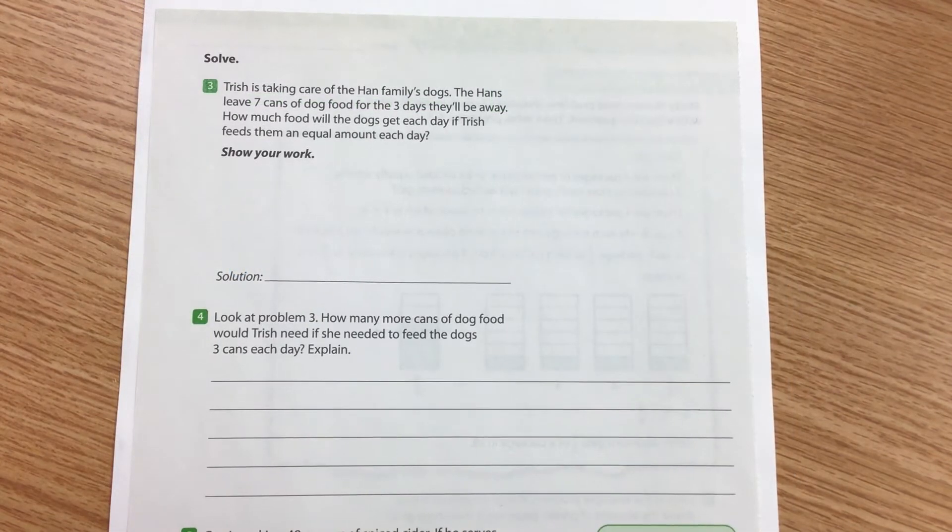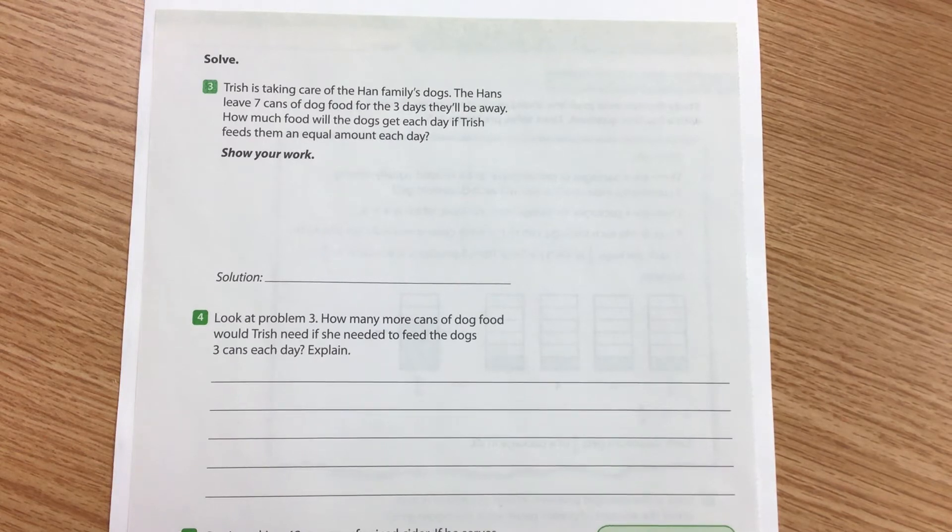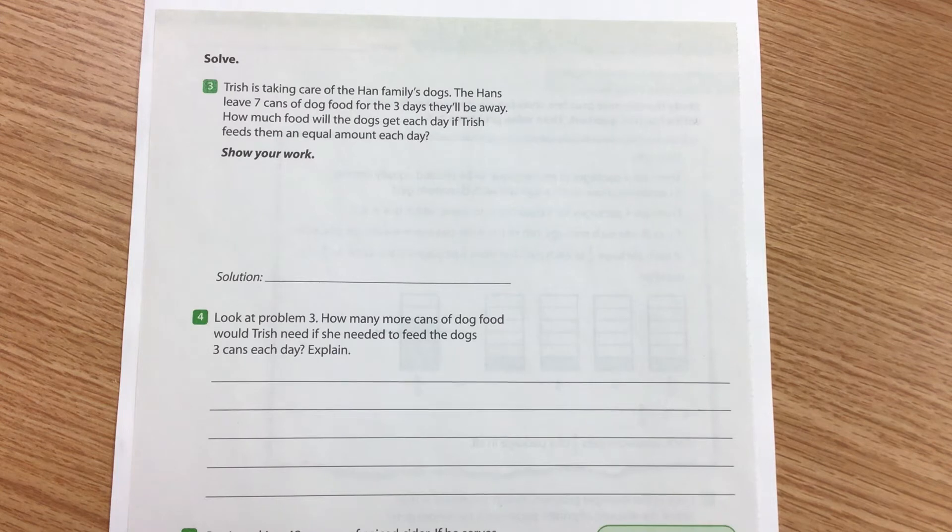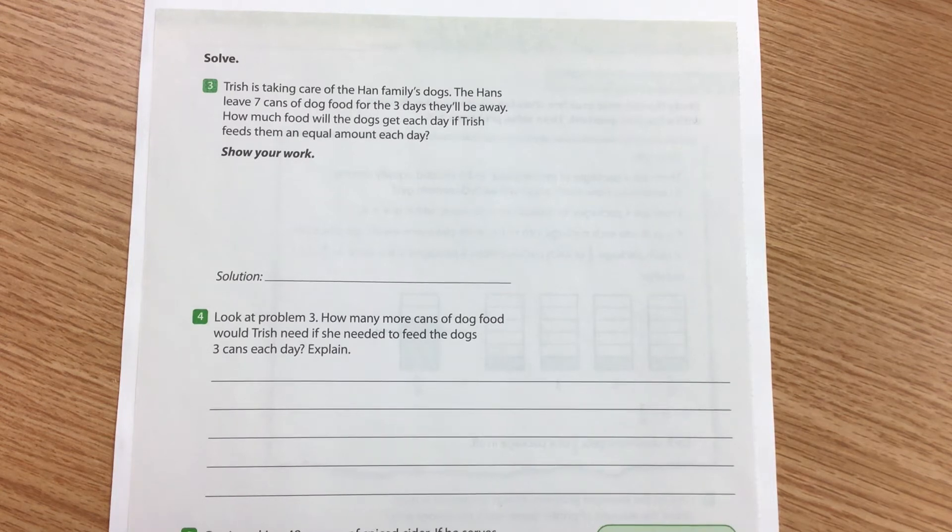Alright, so our next question says, Trish is taking care of the Han family's dogs. The Hans leave seven cans of dog food for the three days they'll be away. How much food will the dogs get each day if Trish feeds them an equal amount each day? So you need to show your work for this one.